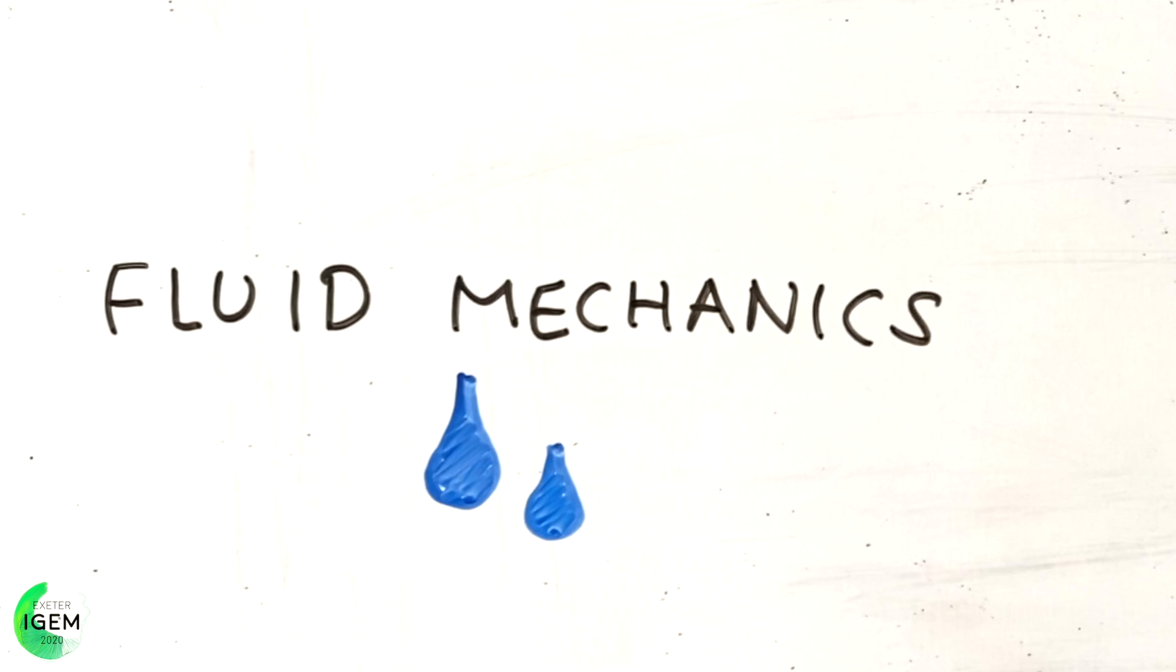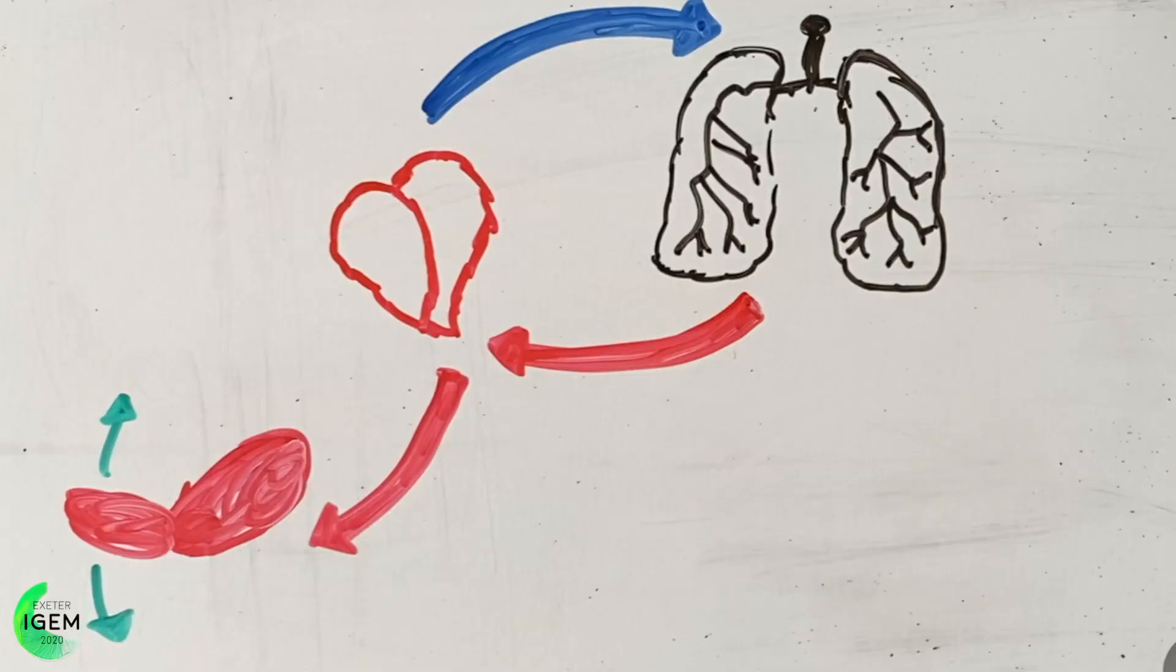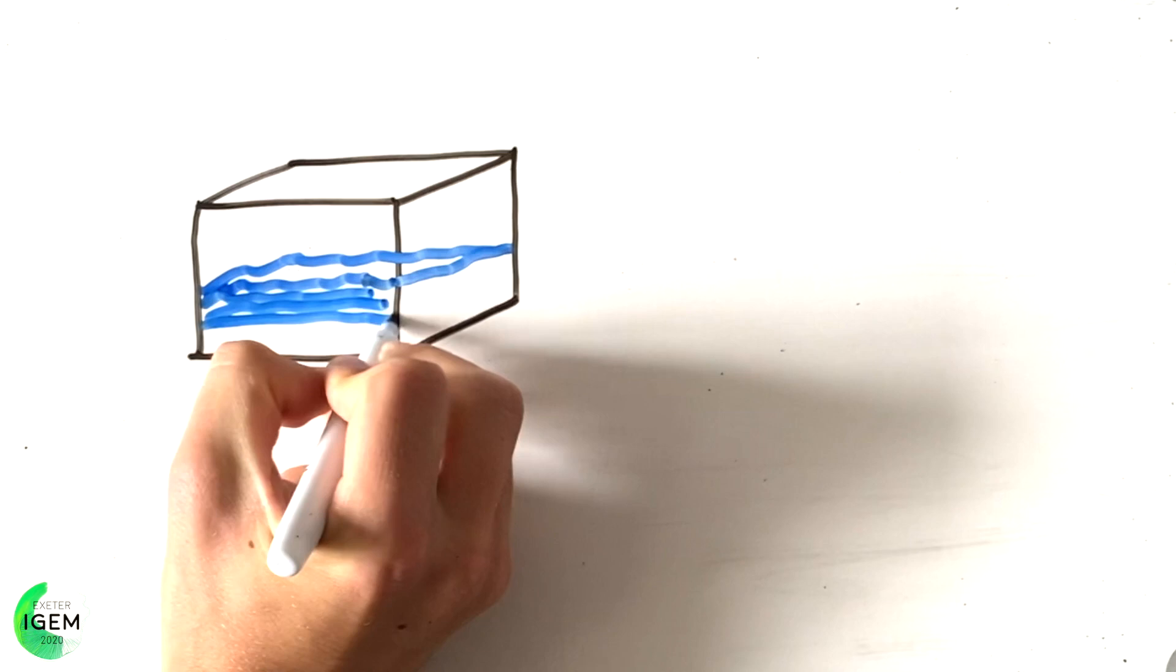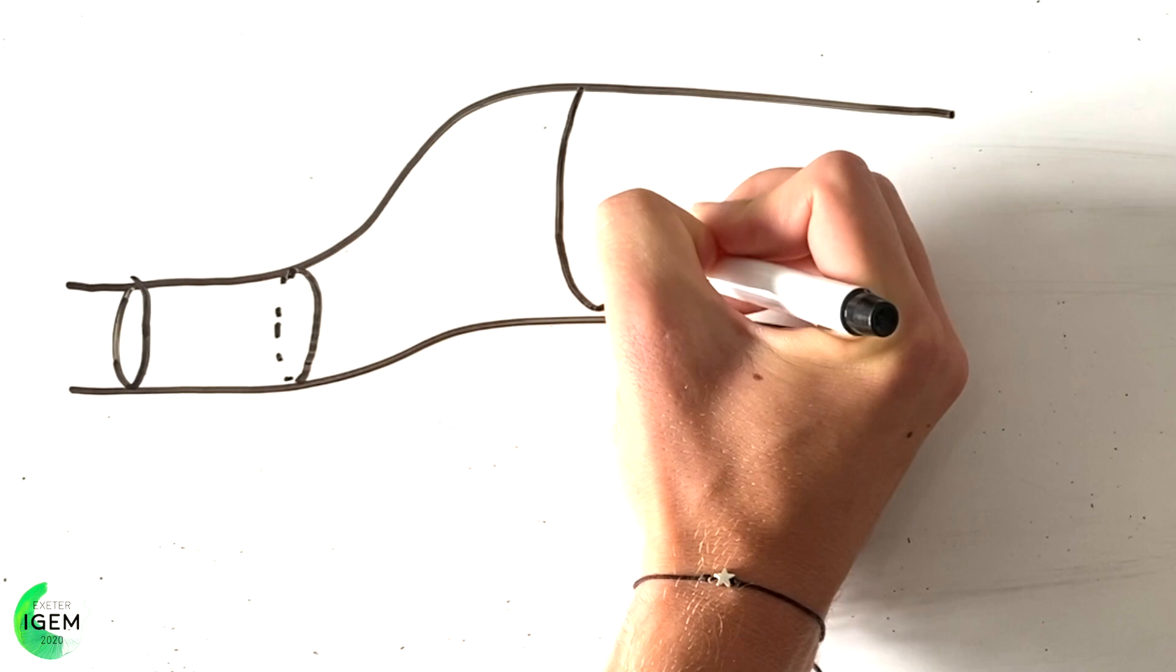Now we come on to fluid mechanics. In biology, many processes involve substances being transported in a fluid, for example in blood circulation and gas exchange. To know how fluids flow in certain geometries and under certain conditions, fluid mechanics is used. Fluid mechanics is a highly advanced topic, which requires a lot of knowledge of mathematics. So in this video, we'll only consider the basic ideas.